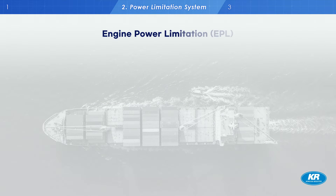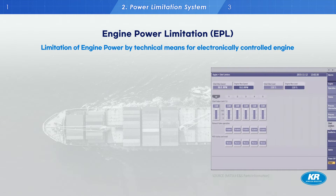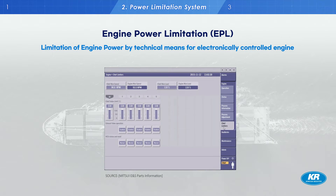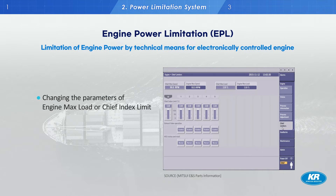This is the power limitation method applied to electronically controlled engines. This type of engine has a command route from the BMS to an electronic governor that passes through the engine control unit, which is called ECU, to adjust power and RPM by changing the fuel index. Unlike the mechanically controlled engine, the ECU has higher priority than the BMS, so the parameter is changed in the ECU instead of the BMS.